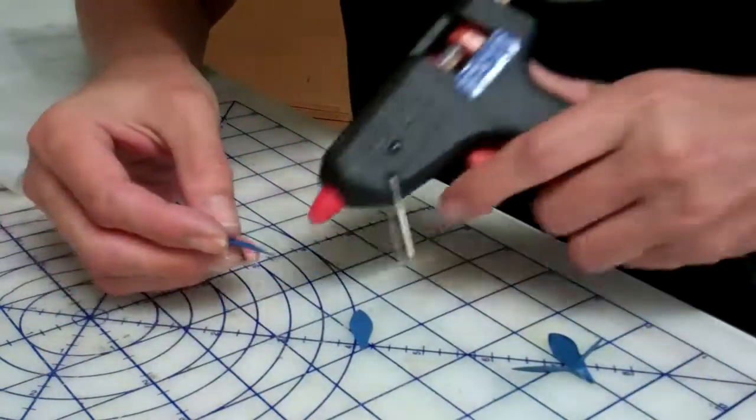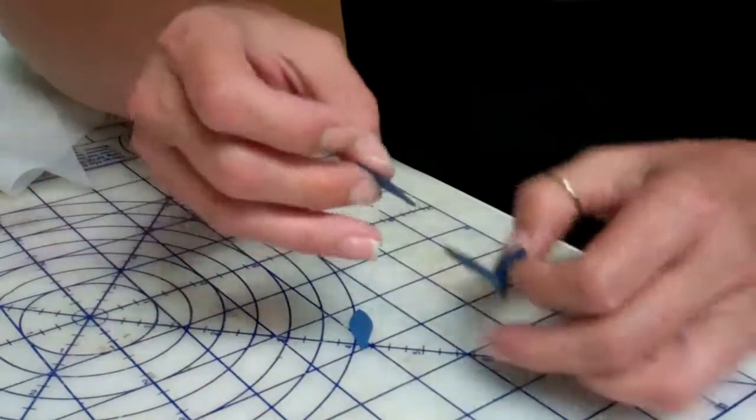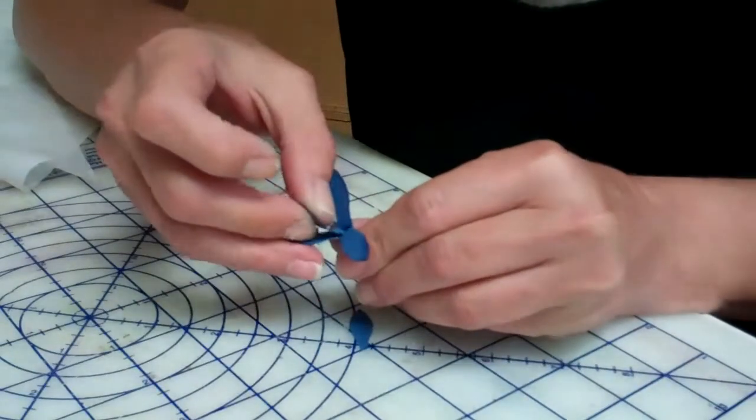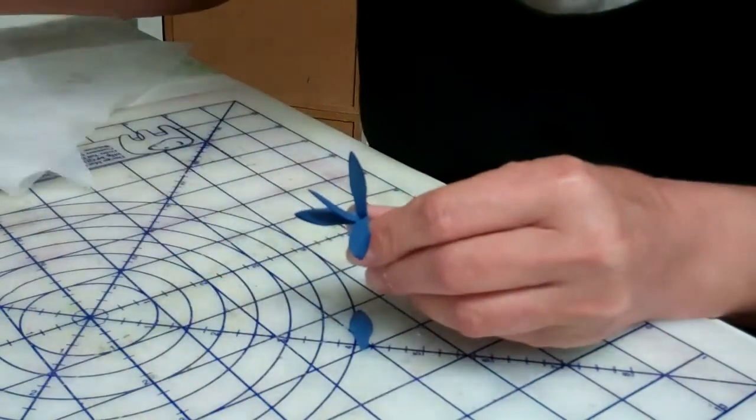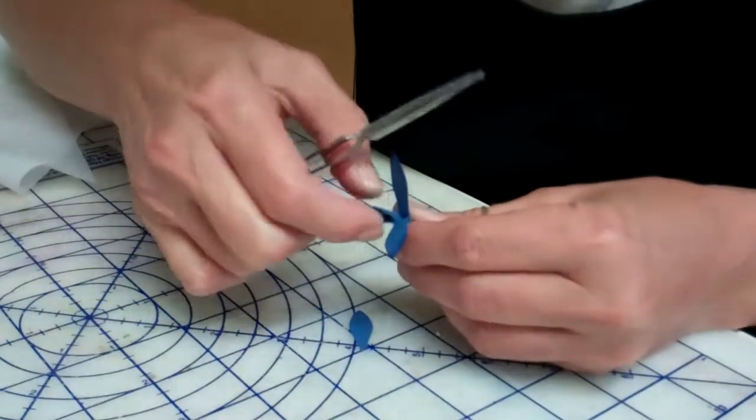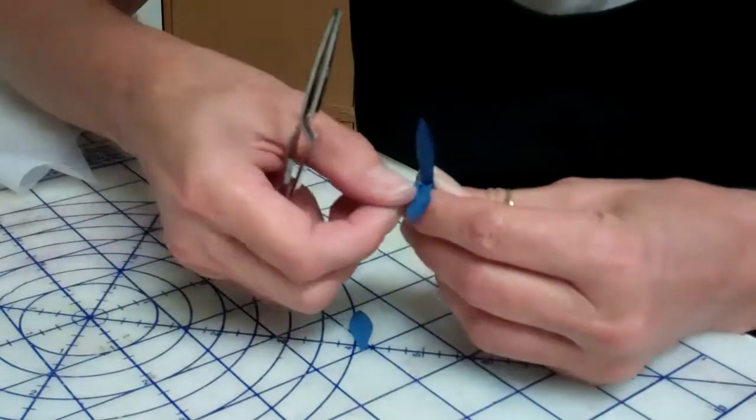And I just put a little glue in the back and it's going to go here in the join between those two petals.